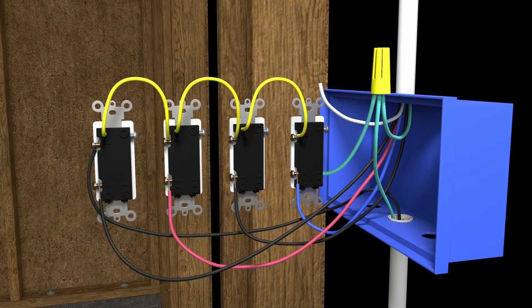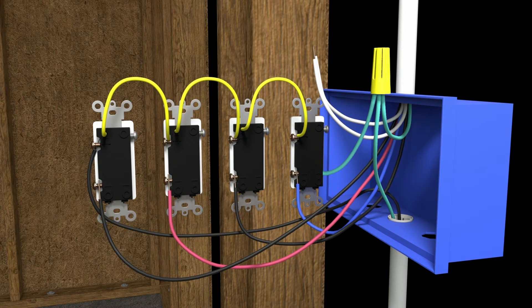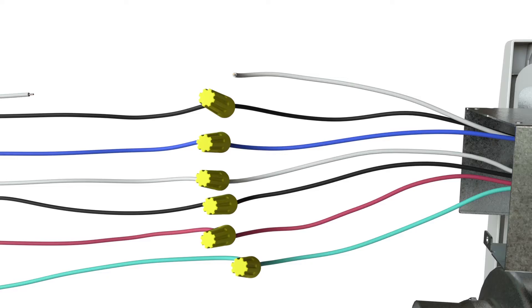The neutral conductor is connected together at the switch box and continues to the fan's junction box where it is connected to the white lead in the fan's junction box.